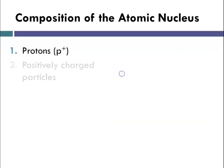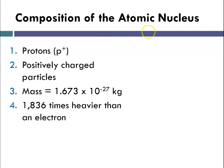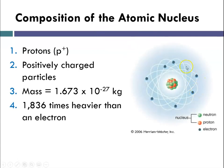Protons are the positively charged particles in the nucleus. Their mass was determined to be 1.673 times 10 to the negative 27 kilograms, which is roughly 1,800 times the mass of an electron. We're talking about the nucleus at this point, and specifically the proton.